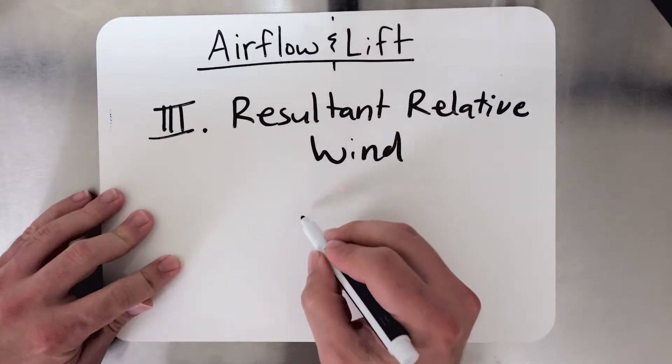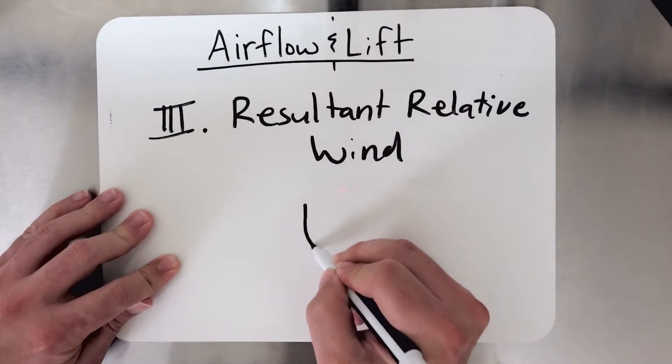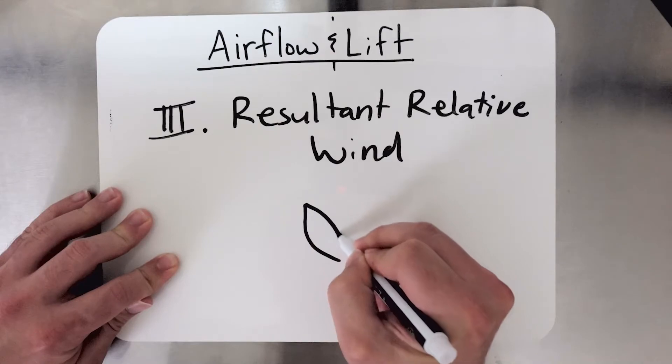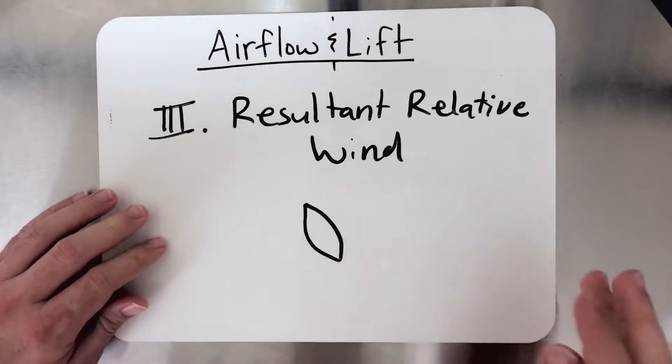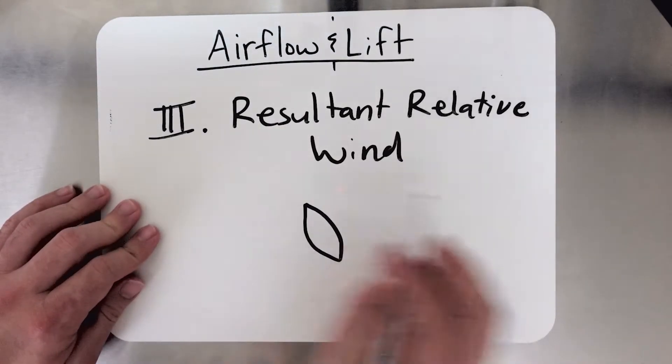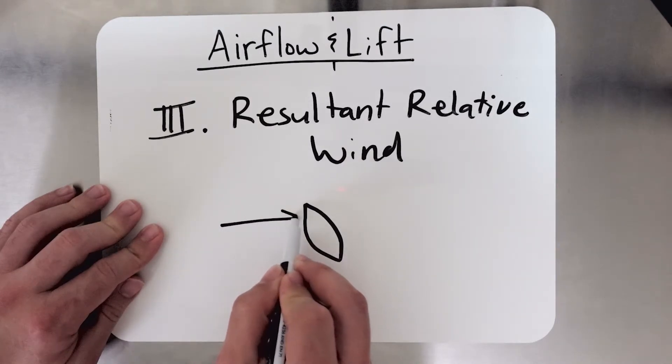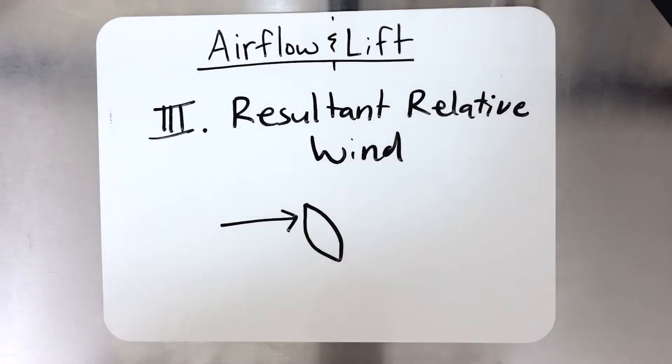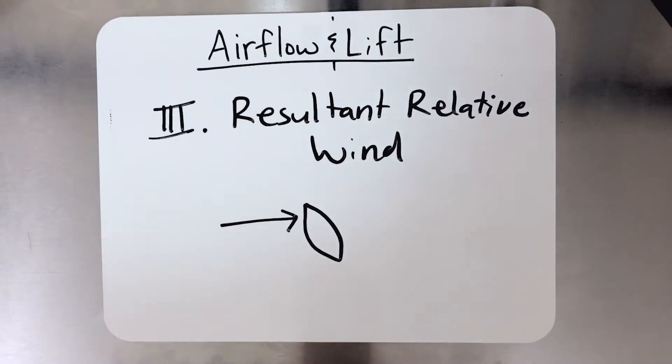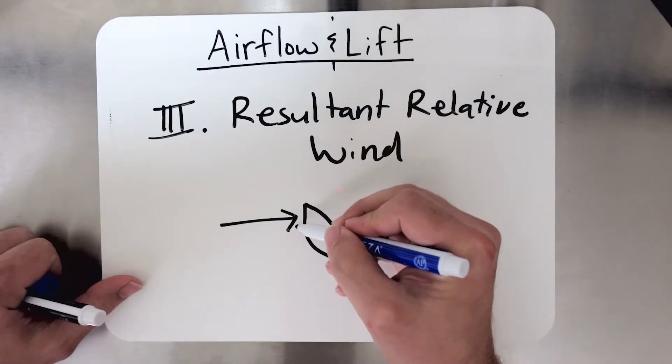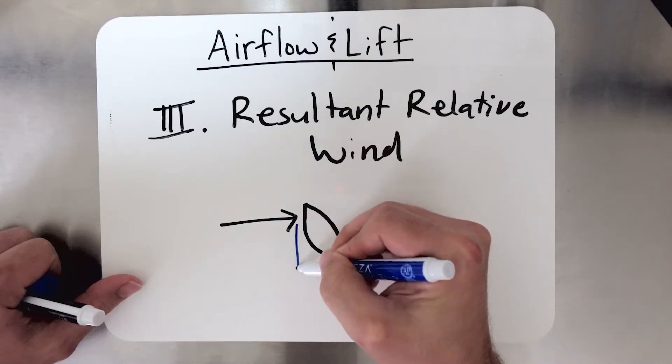Well, let's draw our airfoil again here. And let's draw our rotational relative wind at some point in the rotation. We're going to have a rotational relative wind in that direction. We also know, as we just talked about, that there's an induced flow. So there's a downward component to this, and we'll just draw that here.